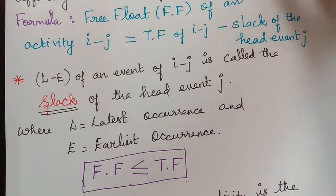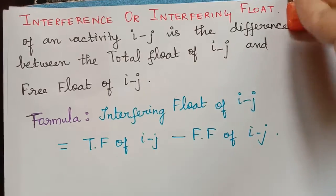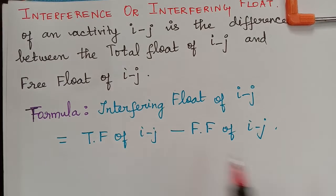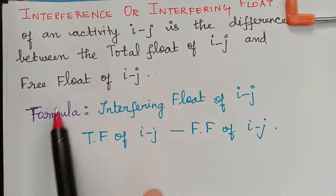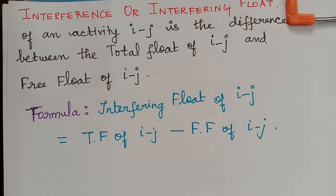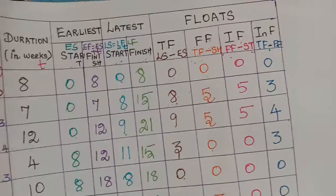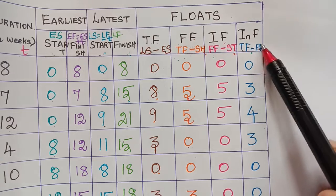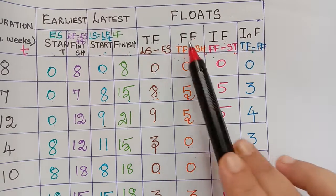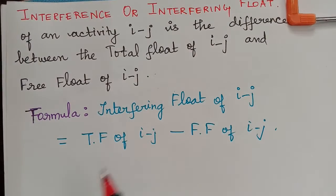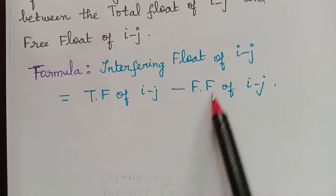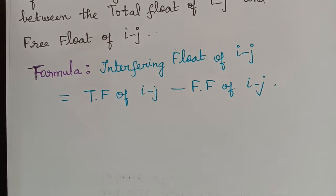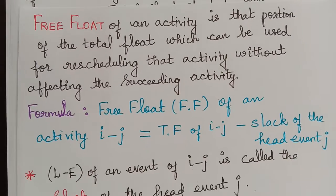Next we have the interference float, also called interfering float. This is the float of an activity I to J, which is the difference between the total float and the free float. In the problem we solved, we calculated the interfering float by subtracting the free float from the total float: TF minus FF equals interfering float. So these are the definitions for total float, free float, independent float, and interfering float — the four types of floats.